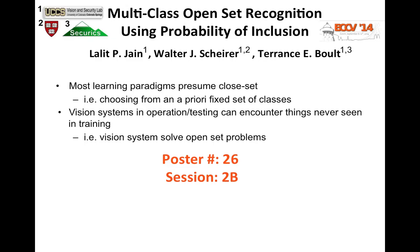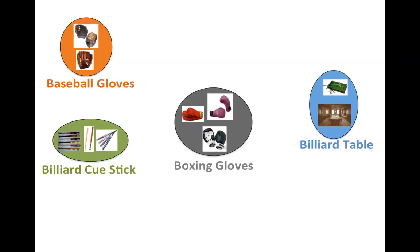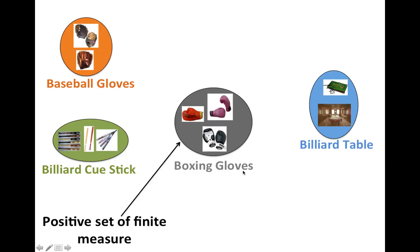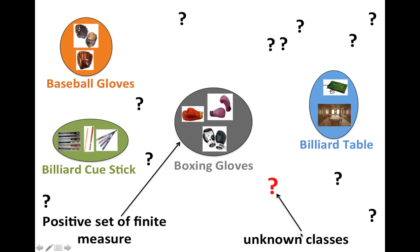In this paper, we are proposing a technique for multi-class open-set recognition using probability of inclusion. Consider a multi-class recognition problem where we have classes such as baseball gloves, billiard cue sticks, boxing gloves, and billiard table. Now consider an application where we want to recognize the class boxing gloves with respect to other classes and unknown classes — classes we can encounter in testing but that are unseen during training.